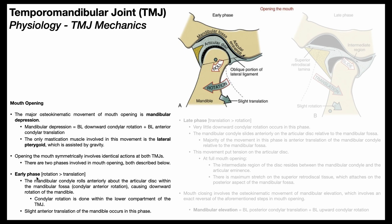Mandibular depression involves both downward condylar rotation and anterior condylar translation, but in the early phase the rotation is much greater than the translation. The mandibular condyle is going to roll anteriorly about the articular disc within the mandibular fossa. Here's the mandibular condyle, up top is the mandibular fossa, and within the joint cavity we have the articular disc, which separates the cavity into a superior part and an inferior part. This condylar rotation is actually occurring within the lower or inferior joint cavity space — you could almost think of the mandibular condyle articulating directly with the inferior portion of the articular disc.